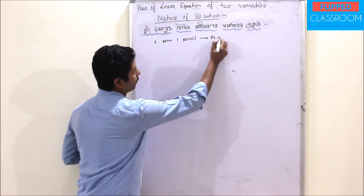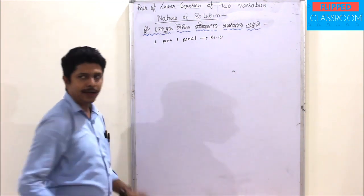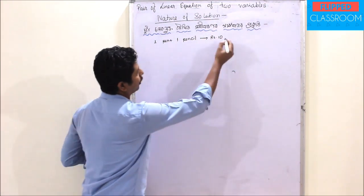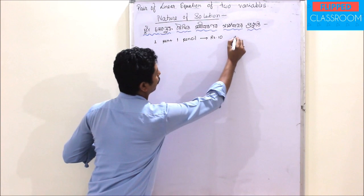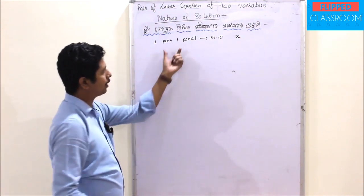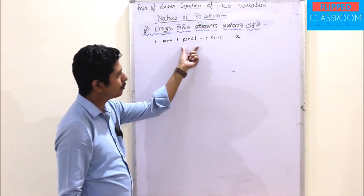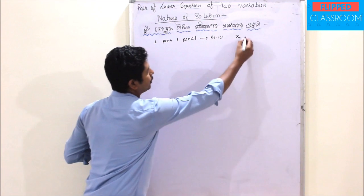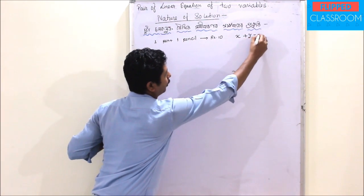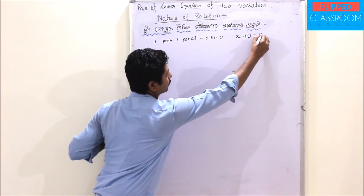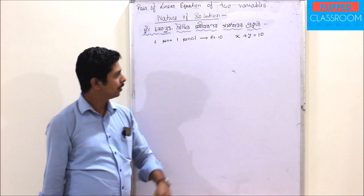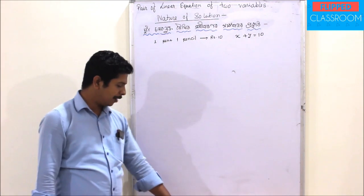The pen is a pen. If we know that the pen is a pen — the pen means a pen is a pen. Then the pen will be a pen. This equals to x plus y equals to ten.